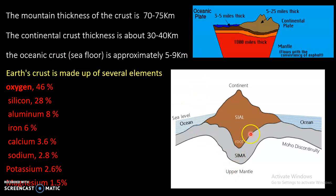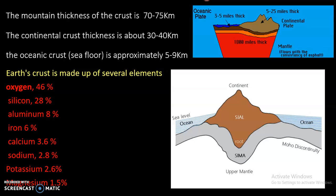The crust is again divided into two layers. The first is SIAL, the upper layer, and the lower layer is called SIMA. SIAL is made up of silicon and aluminium, and SIMA is made up of silicon and magnesium. SIAL contains granitic material and SIMA contains basaltic composition. Because of this, SIAL is lighter in shade and SIMA contains basaltic composition and is darker in shade. So SIMA is darker than SIAL. These are the two distinct layers of the crust: SIAL and SIMA.